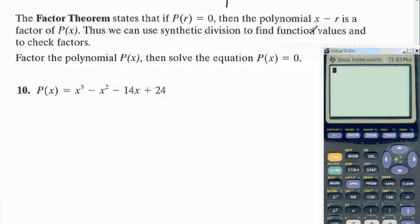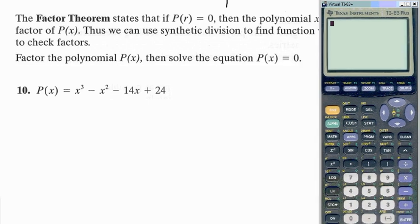So we can use synthetic division to find out if p(r) is equal to 0, if the remainder is 0. Since this function for number 10 is not factorable by grouping or any other method that kind of stands out,